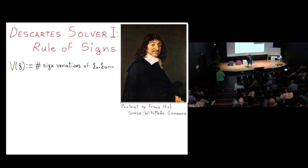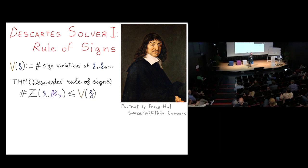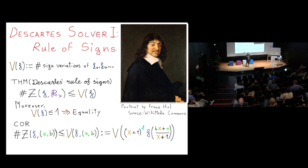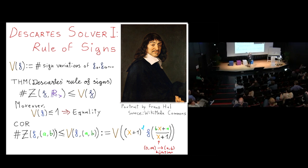Descartes, in the geometry appendix to his work, observed that the number of positive real roots of a polynomial is less than or equal to the number of sign variations. The most important case is when the number of sign variations is at most one — then we have equality. We are interested in roots in an arbitrary interval, so we reparametrize to send the zero-to-infinity interval to the A-B interval.